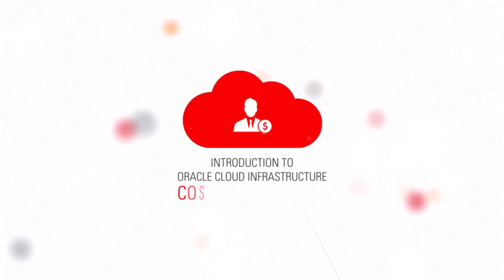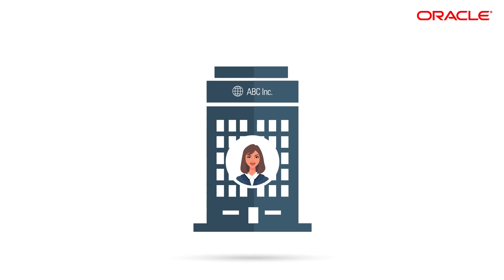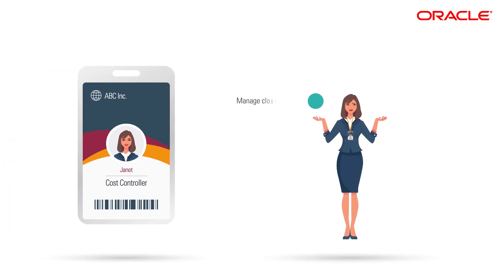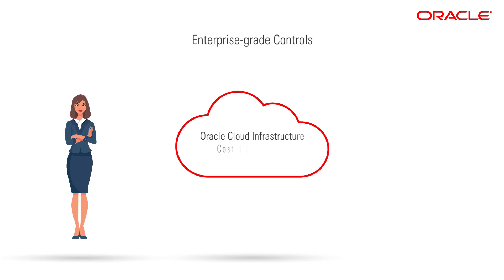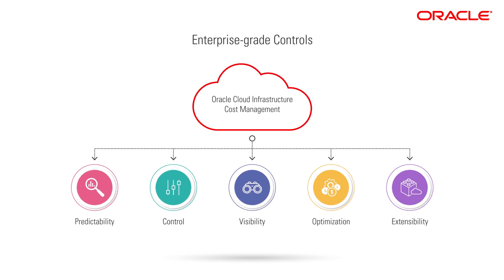Janet is the cost controller at ABC Incorporated. She is responsible for governance over cloud spending at her company, and that includes managing cloud budgets, staying on top of cloud spend, and analyzing usage to find ways to optimize costs. Janet depends on the enterprise-grade controls provided by Oracle Cloud Infrastructure's cost management solutions to deliver the predictability, control, visibility, optimization, and extensibility she needs to maintain governance over cloud costs.